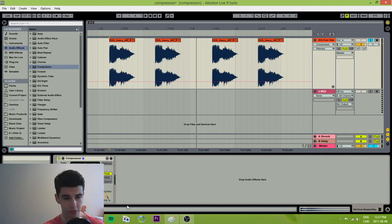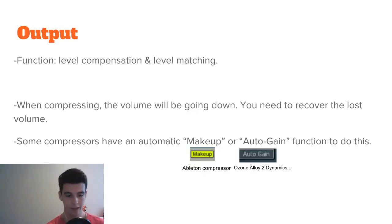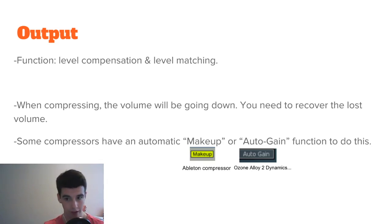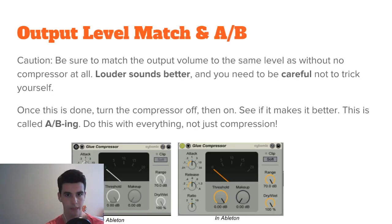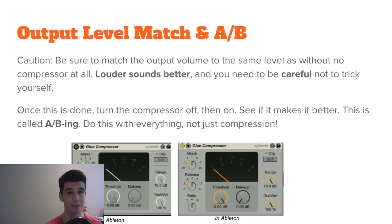Just a general tip about the attack and release: you can make things sound really tight or a bit looser. Let's talk about the output now. The function of the output is for level compensation and level matching. When you compress something, the volume is going to go down — you need to recover that lost volume using the output knob. Some compressors have an automatic function for that, usually called make-up or auto-gain. About level matching and A/B-ing: be sure to match the output volume to the same level as with no compressor at all. As you may know, louder sounds better and you need to be careful not to trick yourself. So once this is done, turn the compressor off, then on again — just see if you made it better. This is called A/B-ing. It's a very common technique. Do this with everything: EQ-ing, compressing, saturating, whatever.